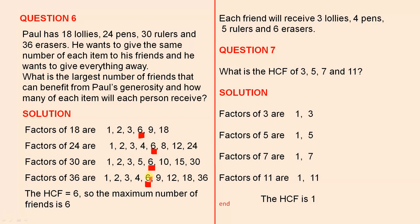But how many prizes of each element do they receive? You've got four different prizes. Each friend will receive three lollies because three sixes are 18 — the HCF is 6. Each friend will receive four pens because four sixes are 24. Each friend will receive five rulers because five sixes are 30. And each friend will receive six erasers because six sixes are 36. That's a very interesting everyday problem, and that's how you apply the HCF rule to solve such a problem.